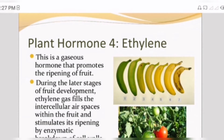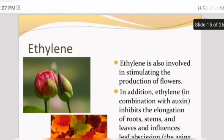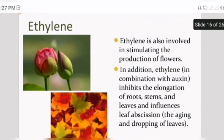Fourth is ethylene. Ethylene is a gaseous hormone that promotes the ripening of fruits — in bananas and other foods, ethylene is used both artificially and naturally to ripen fruits. Ethylene is also involved in stimulating the production of flowers, as some flowers need this hormone to grow and produce lovely flowers.